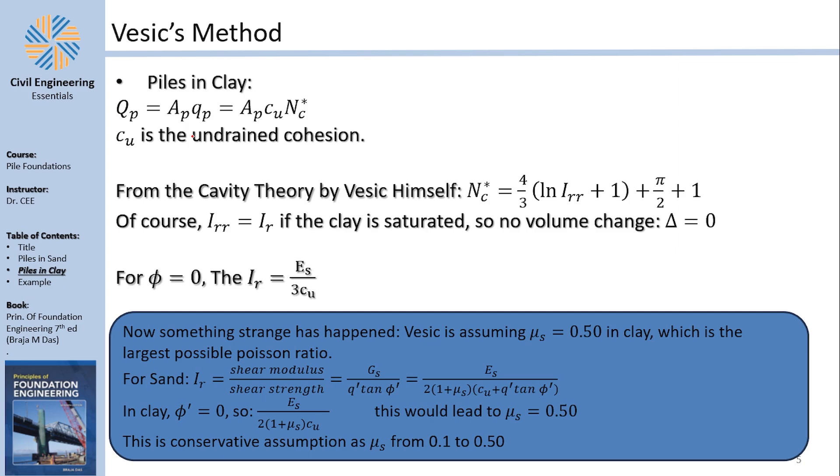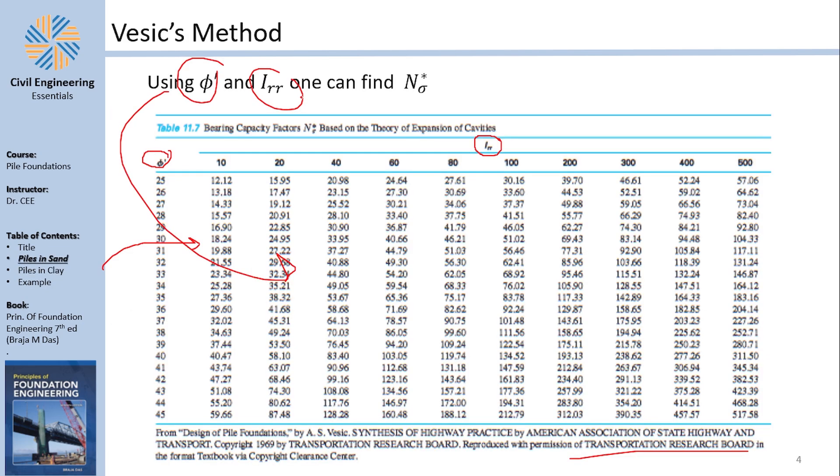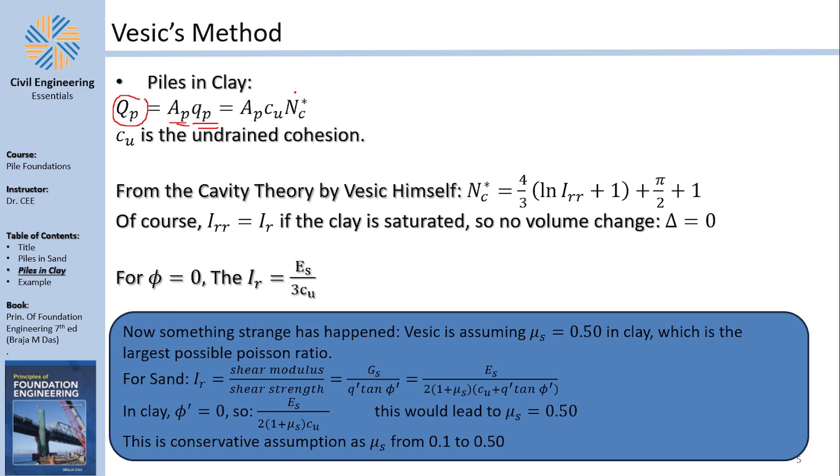In clay, the tip bearing capacity is going to be the area multiplied by, of course, once again, the bearing capacity of soil for a clay. And in the clay, it doesn't become σ̄Nσ, it becomes CuNc. So once again, our biggest topic here is to find Nc. Cu here is the undrained cohesion.